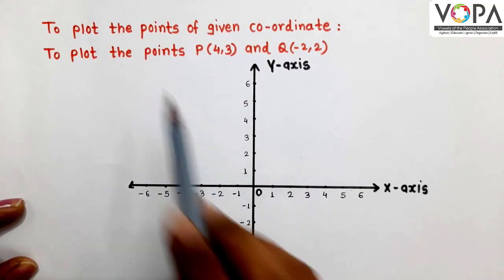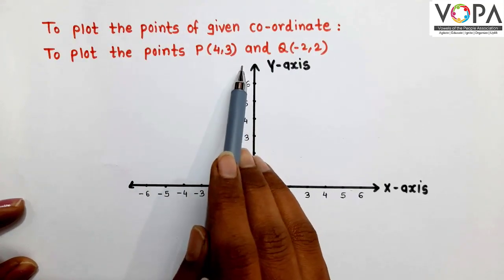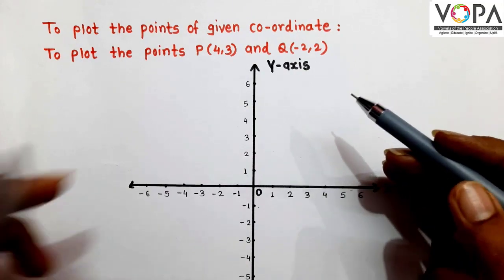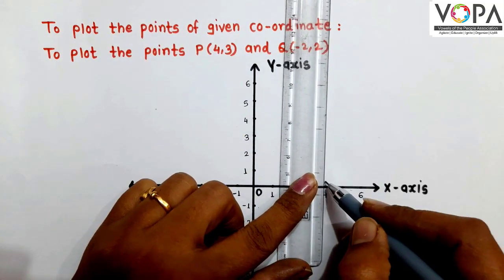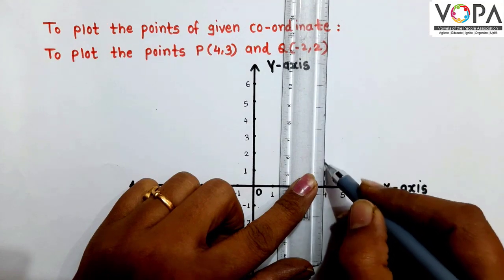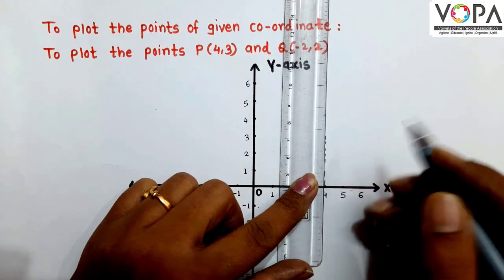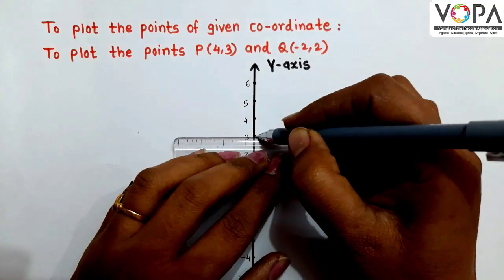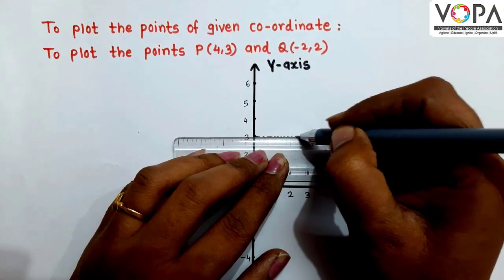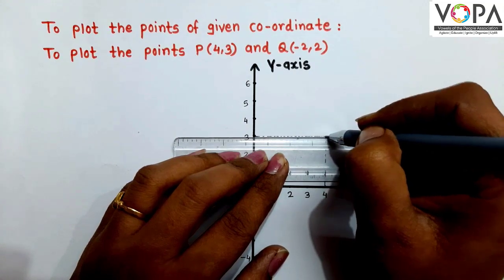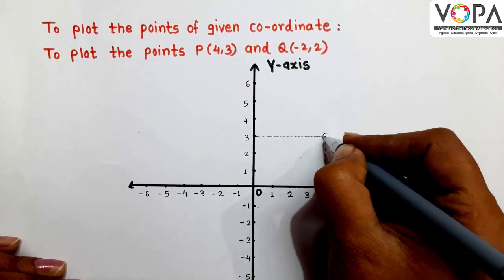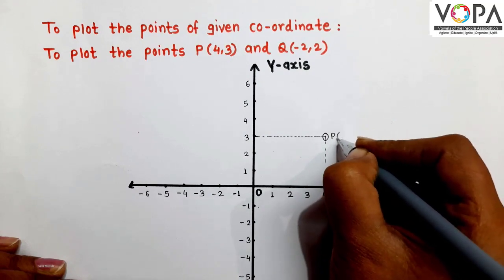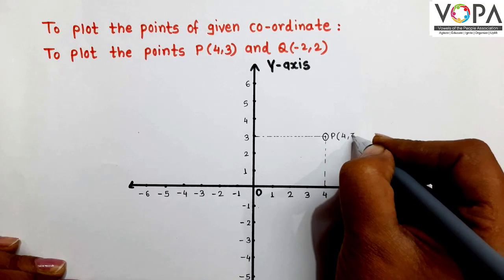To find the point P(4,3), draw a line parallel to the y-axis through the number 4. Then draw a line parallel to the x-axis through the number 3. Here we get point P, and the coordinates of point P are (4,3).